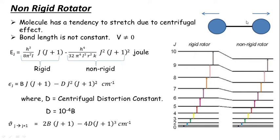Next is the non-rigid rotator. Here we again have a diatomic molecule, but the bond length is not fixed. The molecule has a tendency to stretch due to the centrifugal effect, so bond length is not constant and we have a potential term giving a non-rigid contribution. The wave number is εⱼ = B·J(J+1) − D·J²(J+1)² cm⁻¹, where D is the centrifugal distortion constant, approximately D ≈ 10⁻⁴B. For the non-rigid case, the energy decreases due to the negative term.